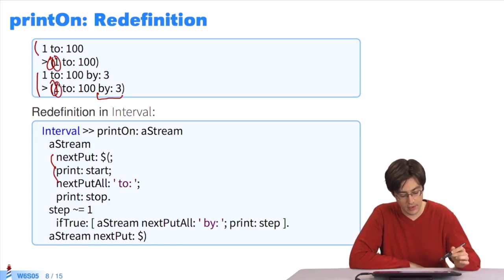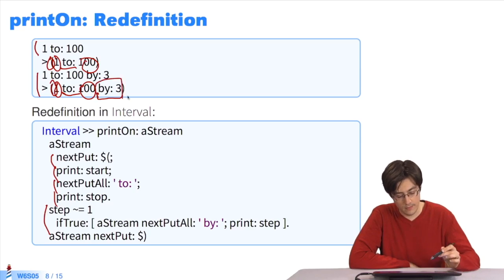That is this 1 here and this 1 here. Then we write 2, and we write the final value, 100 and 100. If there is a by that is different from the default 1, we write the by. And at the end, we close the parentheses.